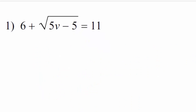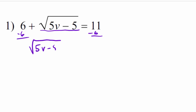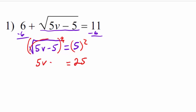For our first example, we want to isolate the square root, which is this one right here. So we're going to subtract 6 from both sides, and we end up with the square root of 5v minus 5 equals 5. Then our next step is to square both sides because a power of 2 will undo a square root. On the right-hand side we get 25, and on the left-hand side the square cancels the square root, leaving 5v minus 5.